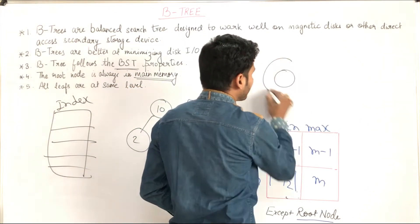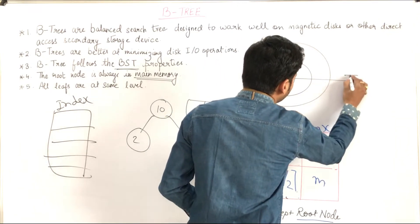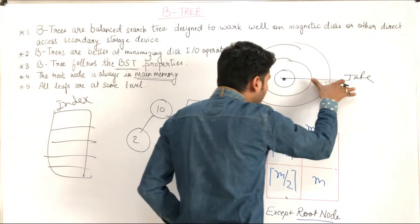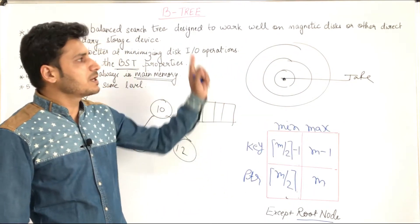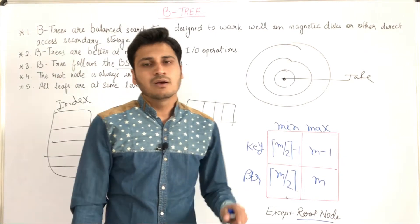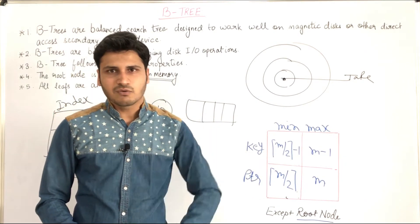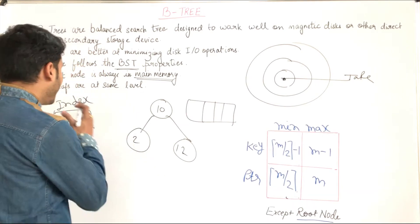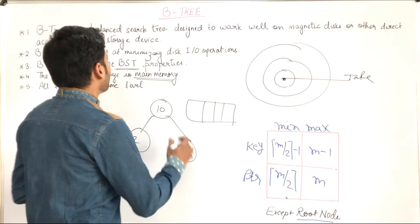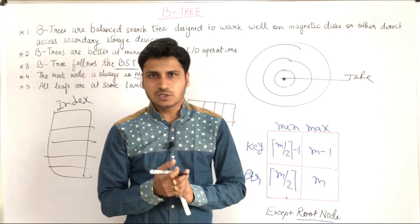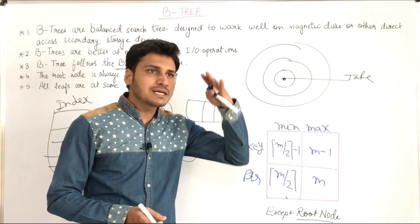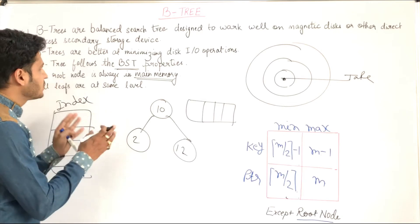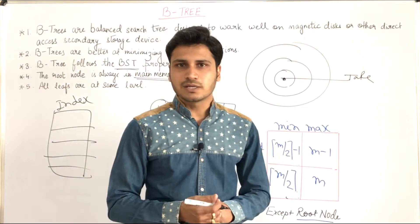B-tree is better at minimizing disk input-output operations. Because we are using secondary memory — obviously a hard disk — whenever there is a data request on the hard disk, the head movement of the secondary memory is reduced. Basically, when the head movement is reduced, the seek time is reduced. When the seek time is reduced, the disk I/O operations are minimized.